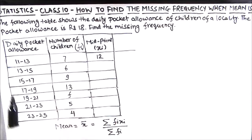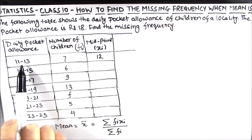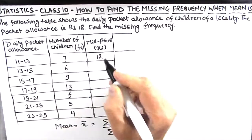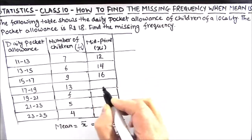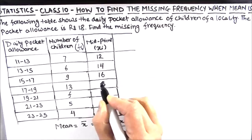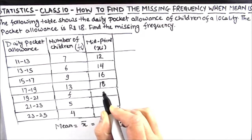But in our table we can see that there is only a difference of one point which is the midpoint. So 11, 12, 13; similarly 13, 14, 15. So this is 14, then 16, 18, 20, 22, and 24.